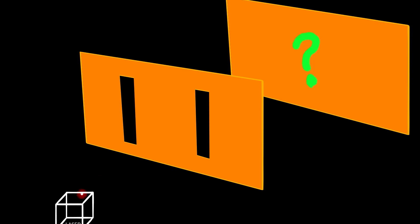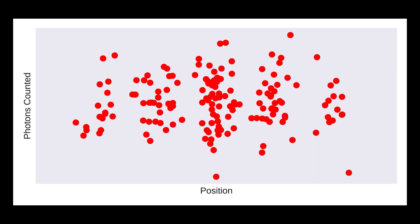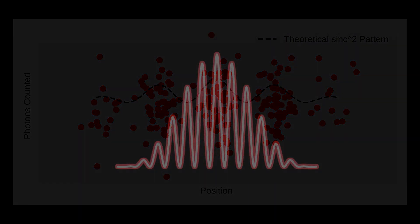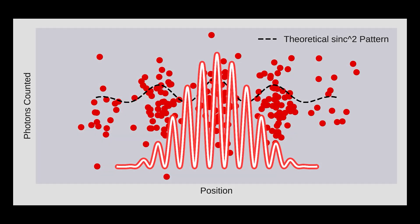But what if we sent just one photon at a time through the slits? Would we still observe the interference pattern? Intuitively you might think not. It's a localized particle after all, which means it would choose either one or the other path. A single photon shouldn't interfere with itself, right? Well, not exactly. Even when photons are sent one at a time, over time they build up an interference pattern.